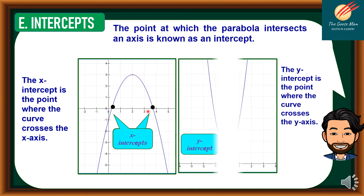On the other hand, the y-intercept is the point where the curve crosses the y-axis. So this is the y-intercept — here is the point.